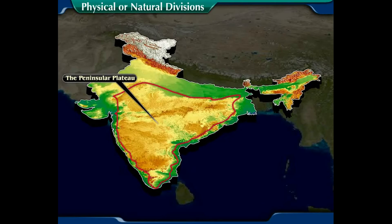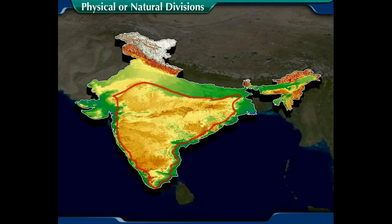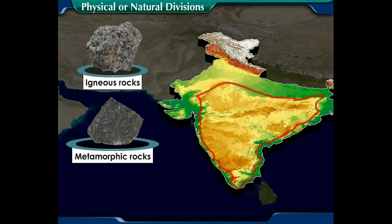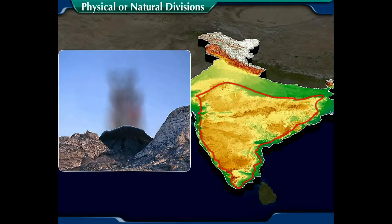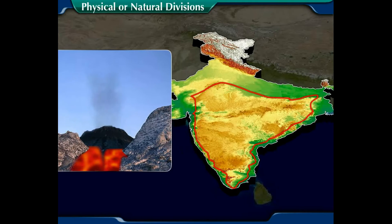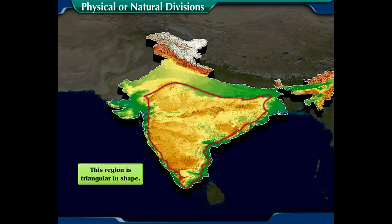The peninsular plateau is the largest natural division of India and one of the oldest and most stable land masses in the world. Characteristics of the peninsular plateau: Number one, it is composed of very old igneous and metamorphic rocks. Number two, due to faulting and volcanic activities, many landform features are found here.